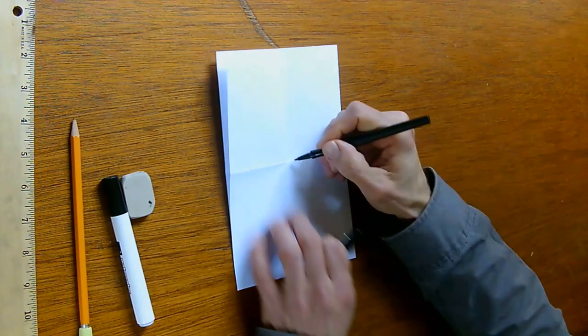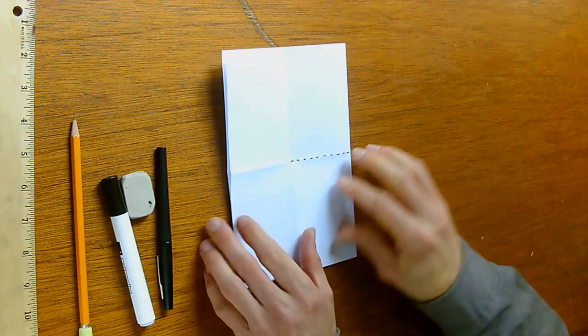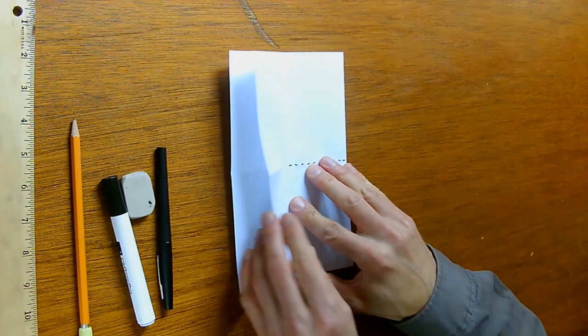Now I'll mark this so you can see it. I'm looking at this fold right here. Now the paper is folded along this edge. It is open on this edge.